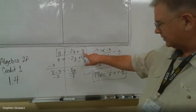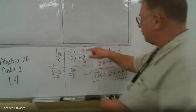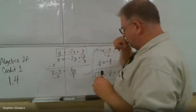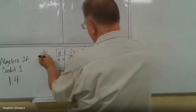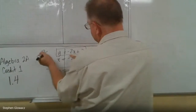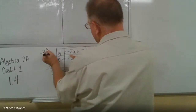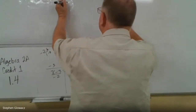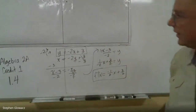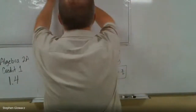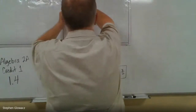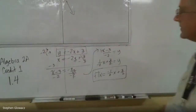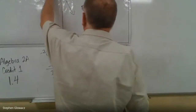Now we're going to graph both the original function and its inverse. Starting with f(x) = -2x + 3: the y-intercept is 3, so we go up to positive 3 and place a point. The slope is -2, so we go down 2 and right 1. We do that a couple of times to get an accurate line and connect the points. That's the graph of f(x).